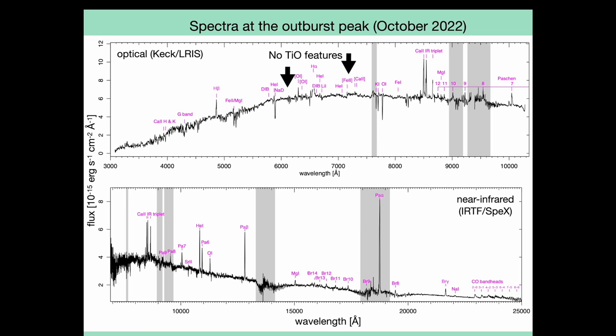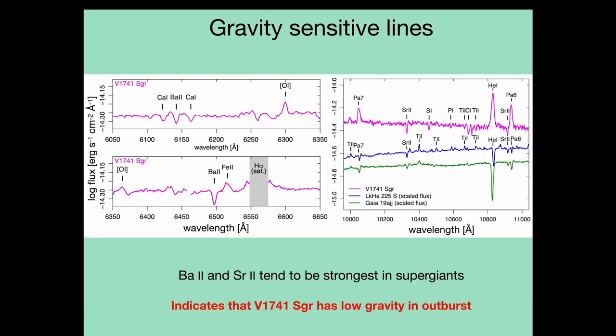Some interesting source properties can be seen by zooming in further on these spectra. For example, the source has several prominent gravity-sensitive lines, including lines from Ba II and Sr II. These lines are strongest in supergiant spectra, so their strength here indicates that V1741 Sagittarius has low gravity. These lines are also seen from disk-dominated FU Ori spectra and can be seen, albeit more weakly, in the spectra of EX Lupi-like stars such as LkH-alpha 225 South and Gaia 19ajj.